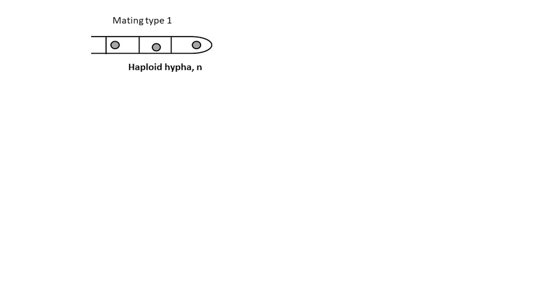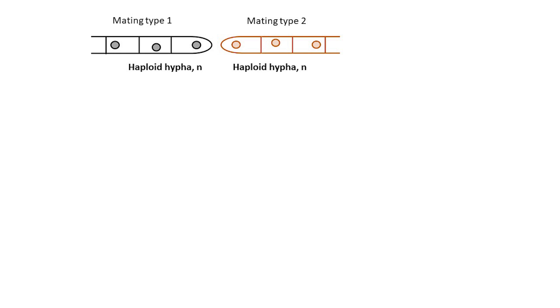The sexual cycle starts from the meeting of two compatible fungal cells. Here you can see the haploid hypha of mating type 1 meets the haploid hypha of the other mating type 2. The mating type is equivalent to genders for fungi. So theoretically, mating type 1 plays the role of the paternal organism while mating type 2 is the maternal organism. The main idea of the term mating type is to show that two organisms are genetically different.